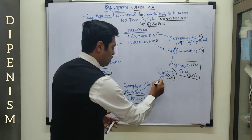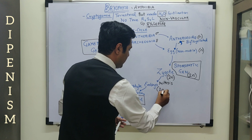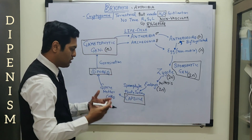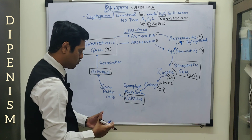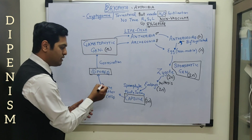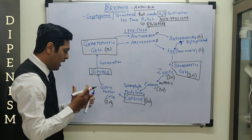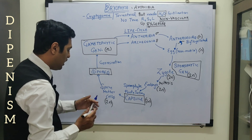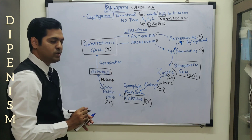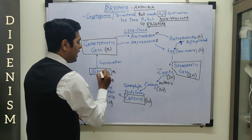Through mitosis, the embryo is formed, which is again diploid. And again with mitotic activity, the sporophyte plant body is developed consisting of foot, seta, and capsule — all of them being again of diploid nature. The capsule contains the spore mother cells, which are again of diploid nature. And these spore mother cells undergo the cell division meiosis.